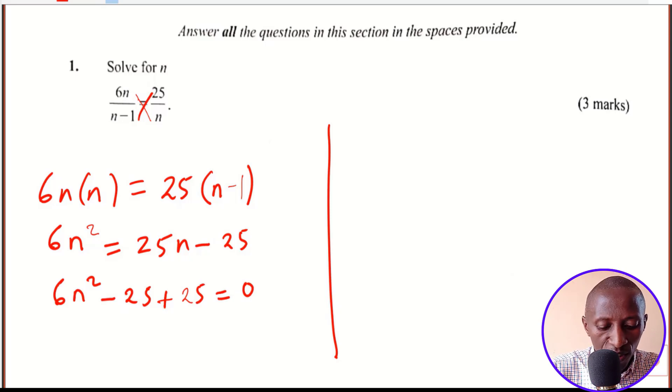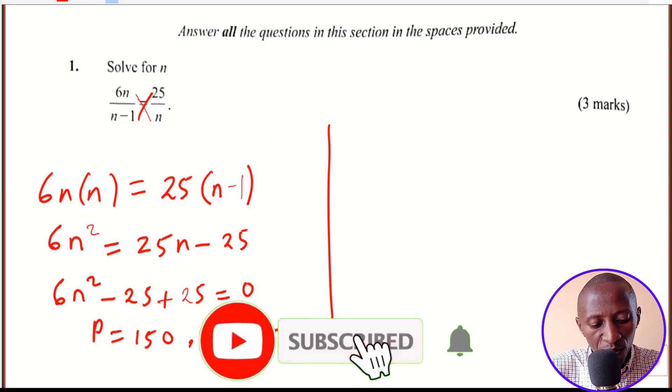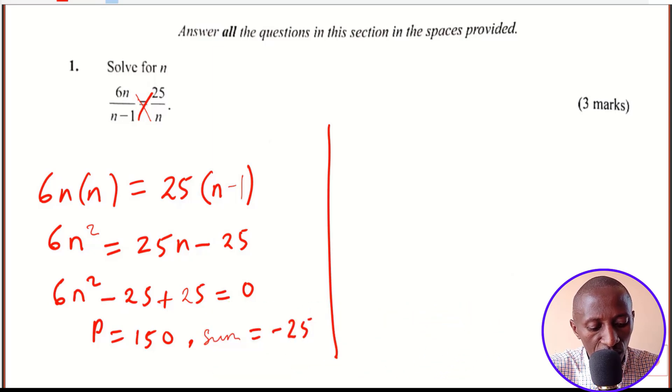At this point we ask ourselves which two numbers will give us a product of 6 by 25, that is 150, and a sum of negative 25. Viewers, take one minute to get those two numbers whose product is 150 and whose sum is negative 25. I believe you've got them. These numbers are negative 15 and negative 10.